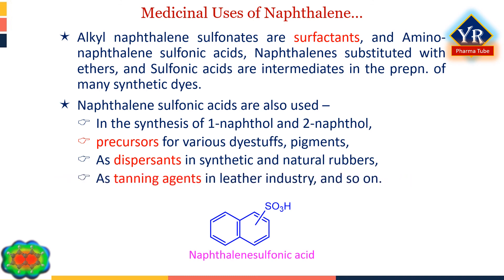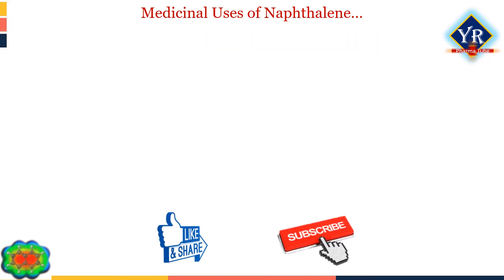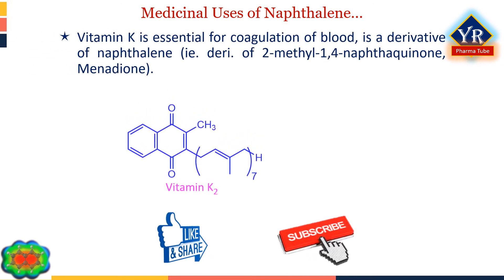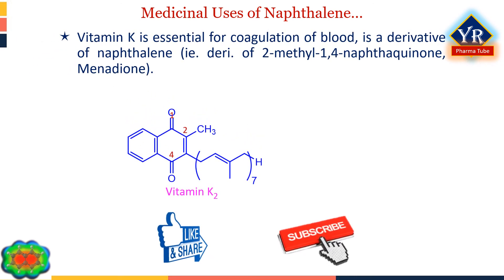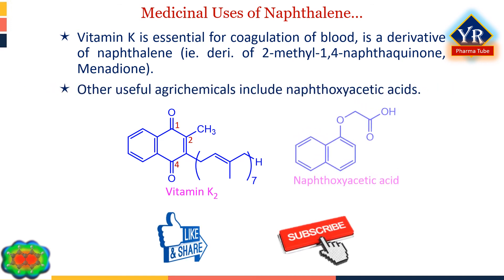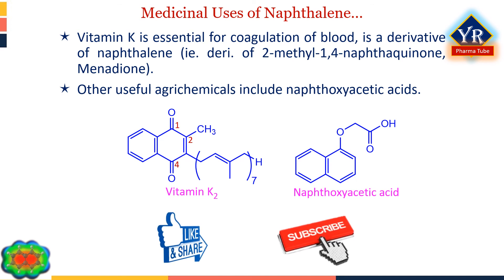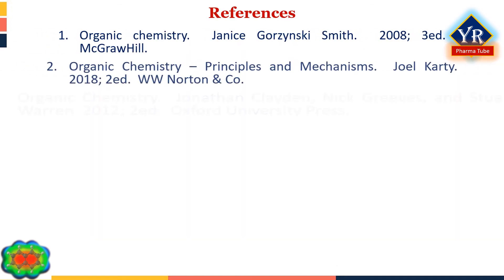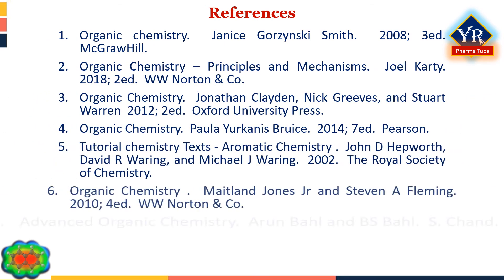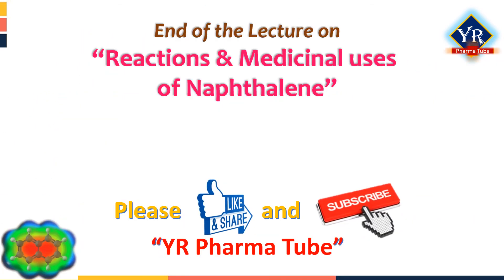Naphthalene sulfonic acids serve as precursors for various dyes and pigments, as dispersants in synthetic and natural rubber processing, and as tanning agents in the leather industry. Vitamin K, which is essential for coagulation of blood, is a derivative of naphthalene — specifically a derivative of 2-methyl-1,4-naphthaquinone, also known as menadione. Other useful agro-chemicals include naphthoxy acetic acids.